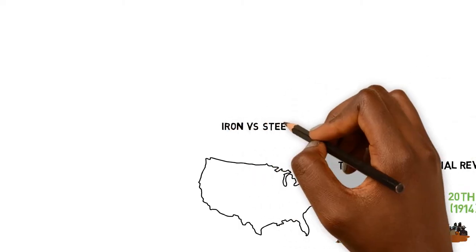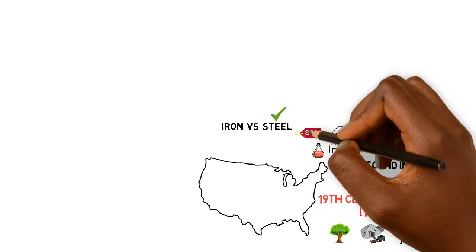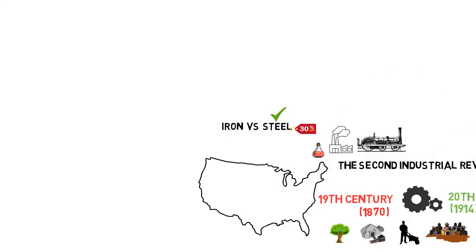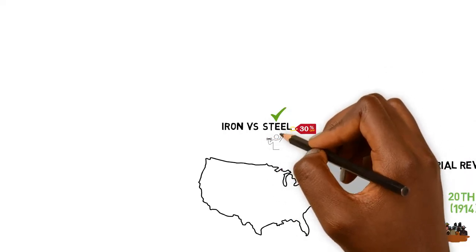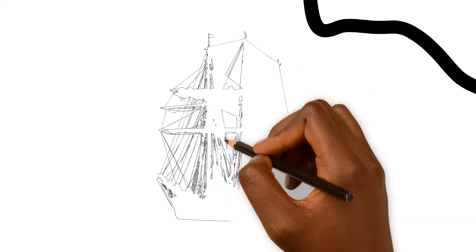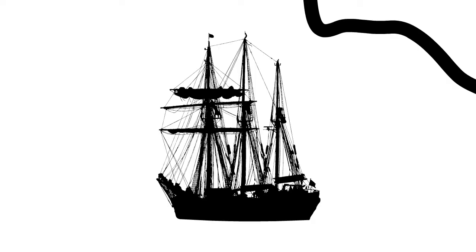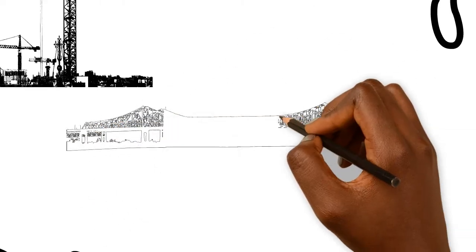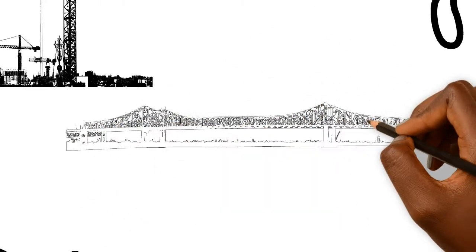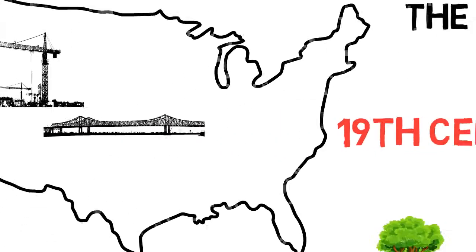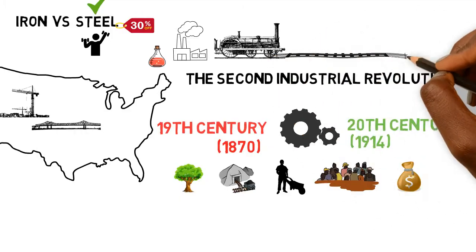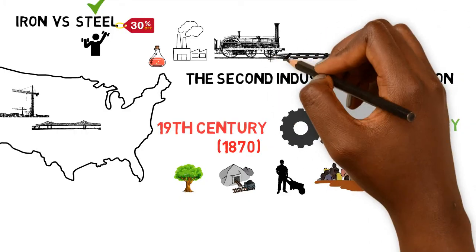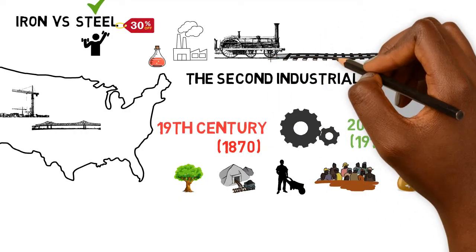Steel replaced iron in the building business, and because it was cheap and strong, it facilitated the construction of ships, skyscrapers, and larger bridges. Steel also made it possible to build the railway lines at competitive costs, and this spread transportation.